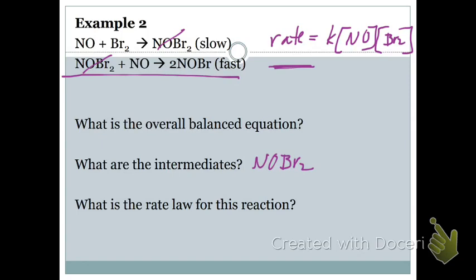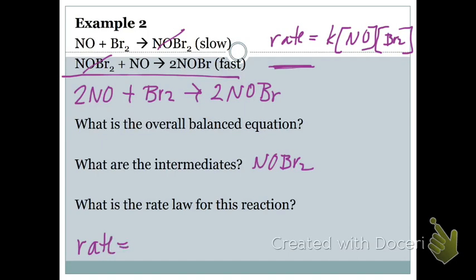Let's write our overall balanced equation: 2NO + Br₂ yields 2NOBr. Everything is balanced. The rate law is what we wrote for the slow step. This is one of those times where your rate law doesn't necessarily match the stoichiometry of your balanced equation, and that's because the slow step was first.